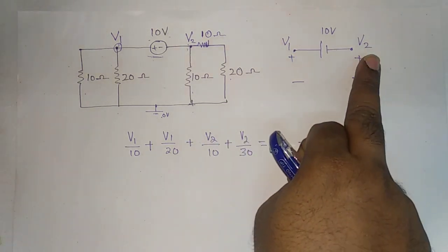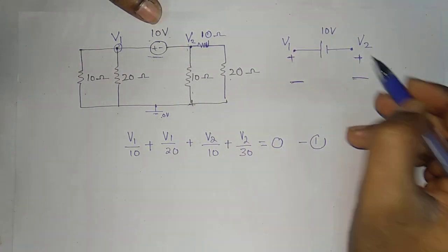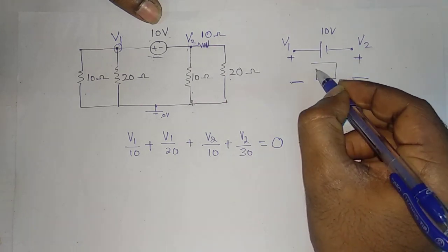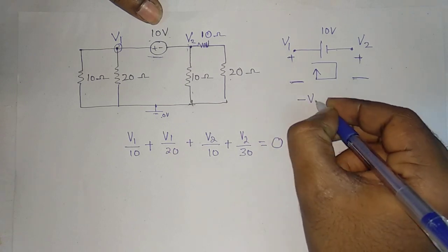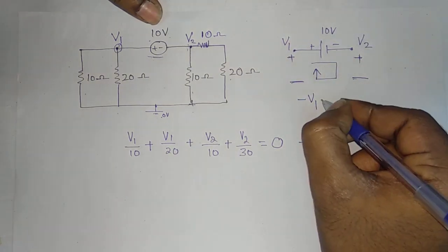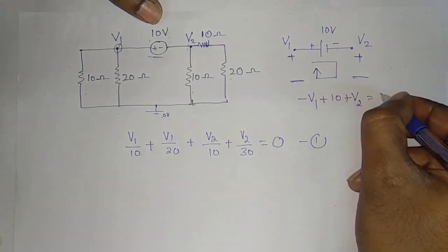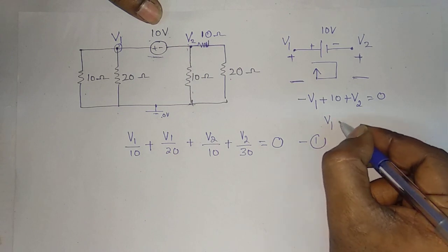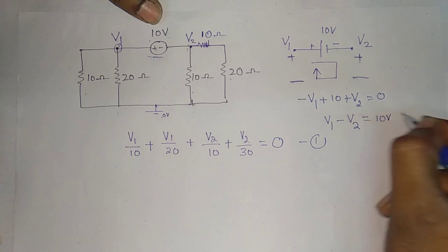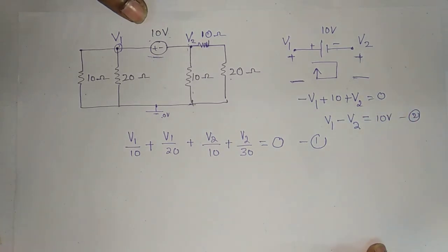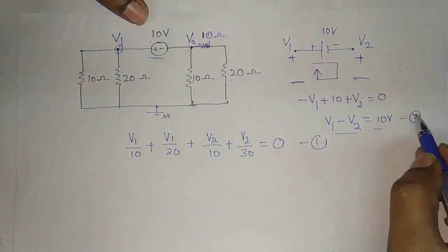V1 minus V2 is equal to 10. So this is the highest potential, plus minus. We apply KVL to this: minus V1 plus 10 plus V2 is equal to 0, giving V1 minus V2 is equal to 10 V. This is the second equation.